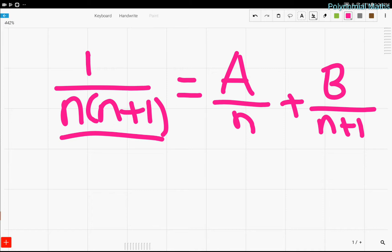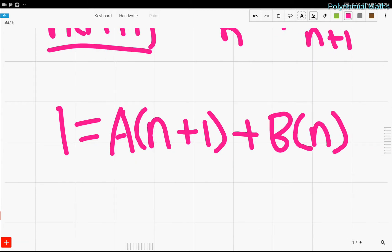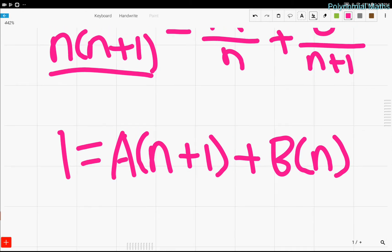Now, we just have to solve for a and b. So, we can do this by multiplying both sides by n times n plus 1 first, of course. So, we're just left with 1 equals a times (n plus 1) plus b times n. Because some of the terms cancel out when we're multiplying.